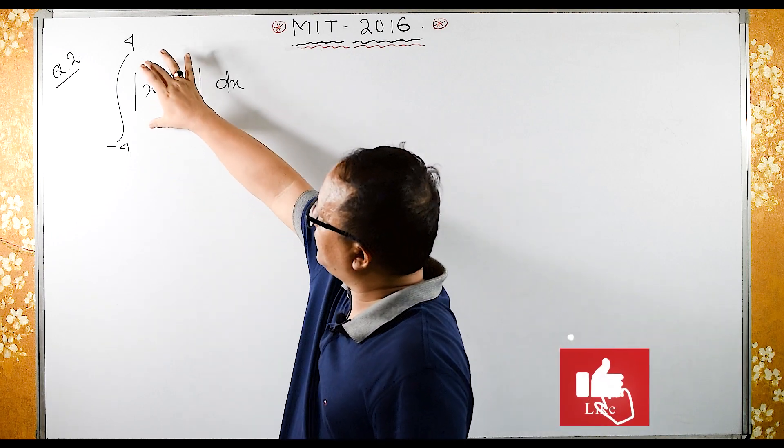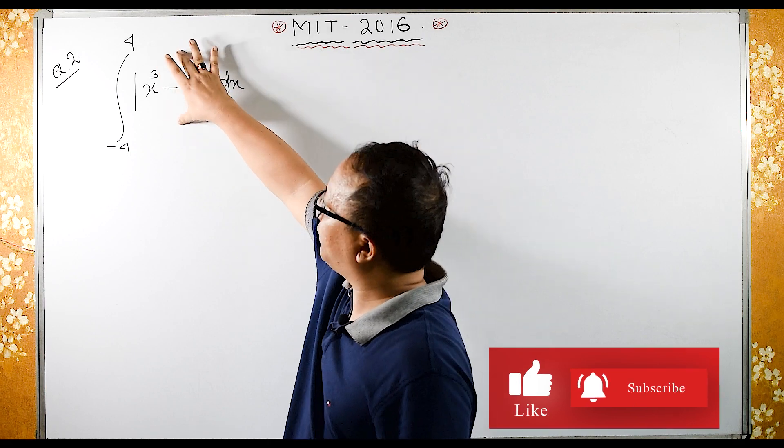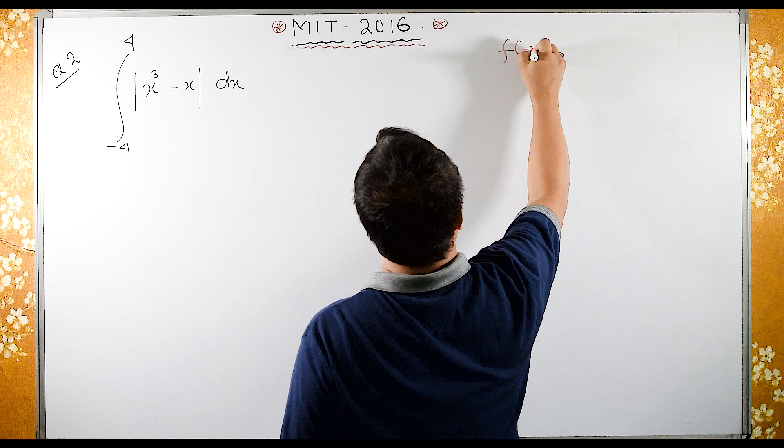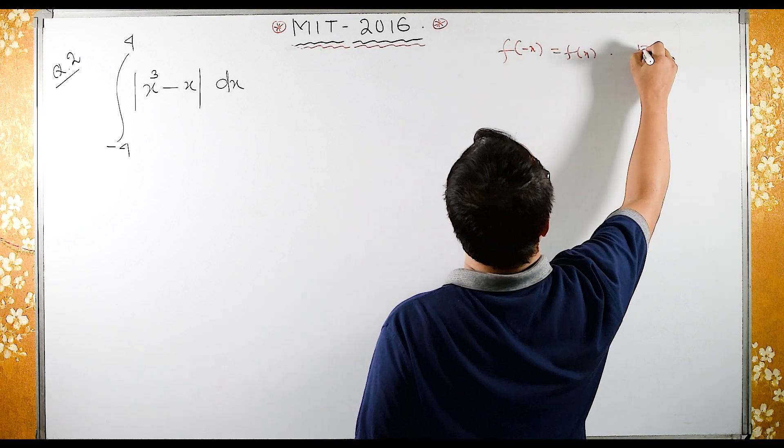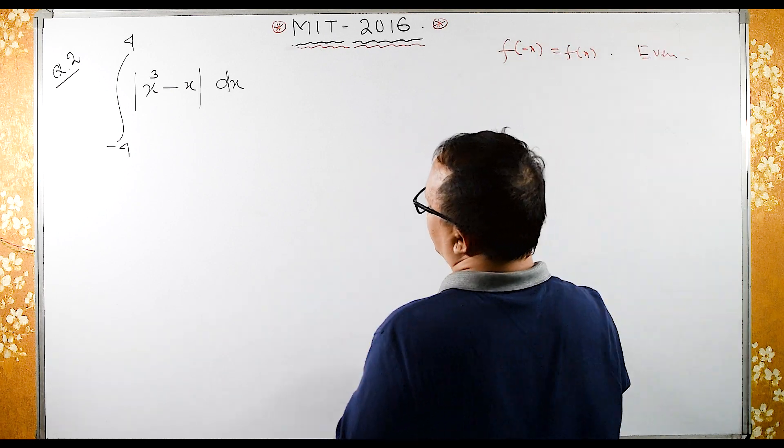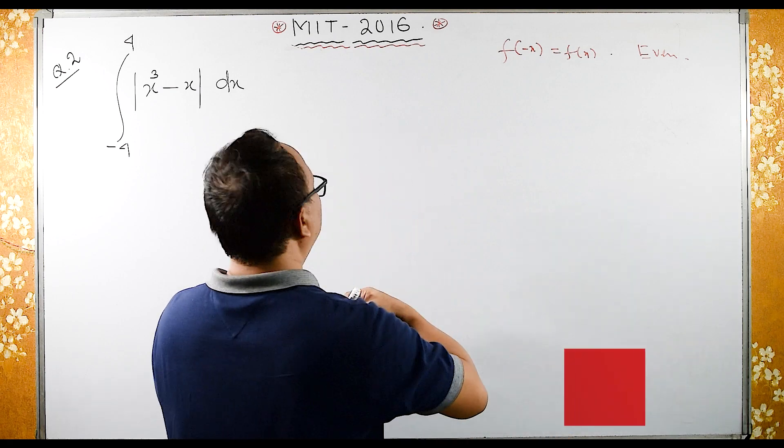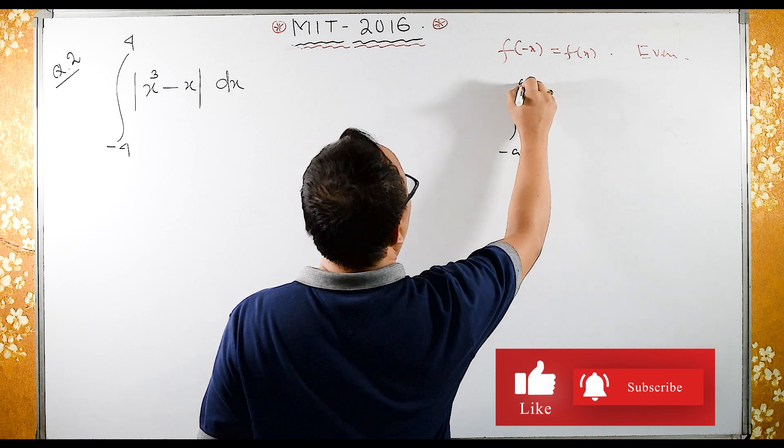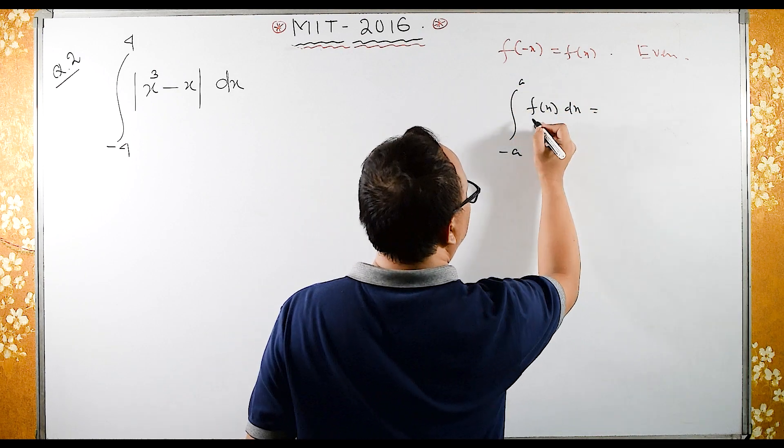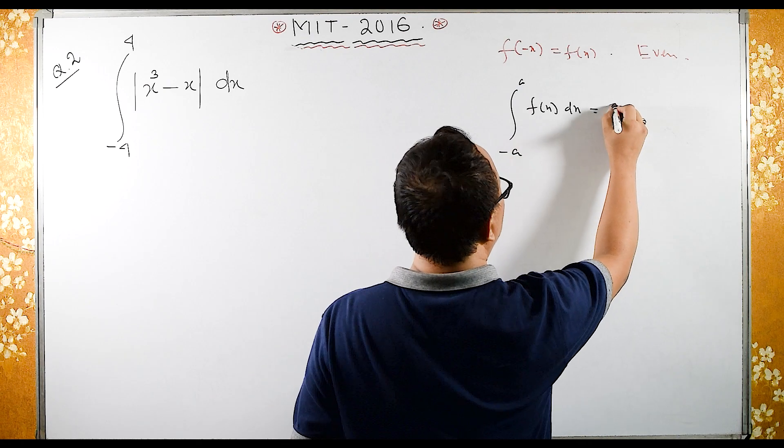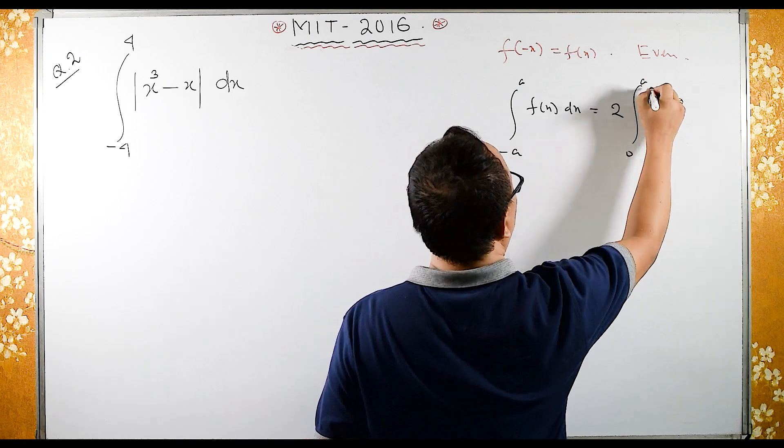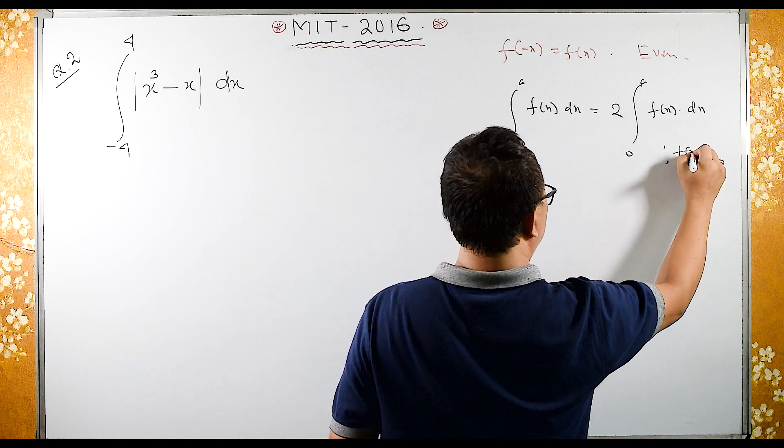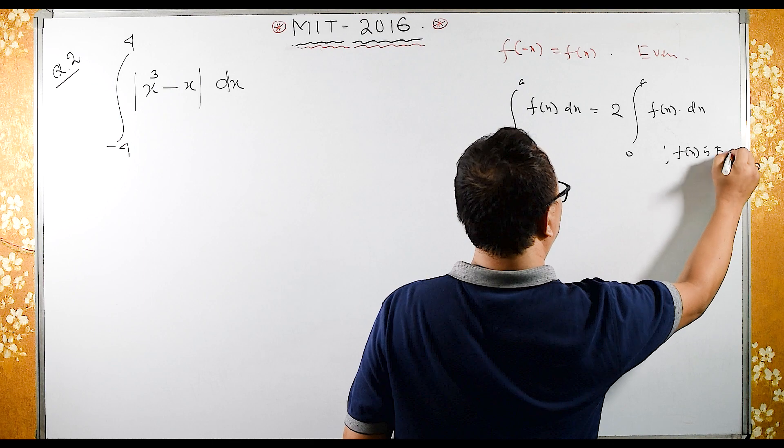Now this function I want to say it is even function. Why it is even function? If f of minus x equals to f of x, then we call this is even function. And then we have integral if it is minus a to a f of x dx. If this f(x) is even function, then this become twice 0 to a f of x into dx when this f(x) should be even function.